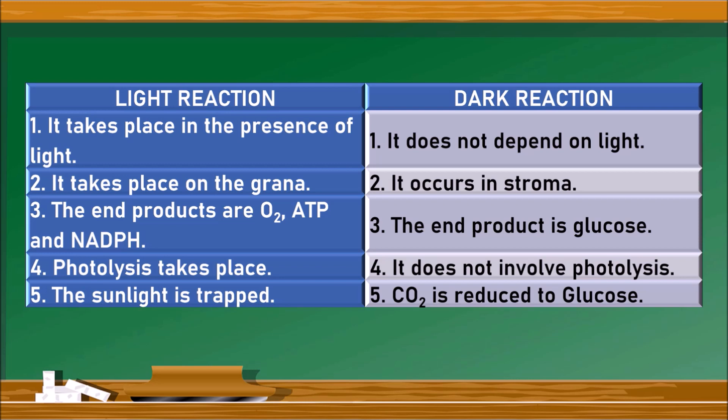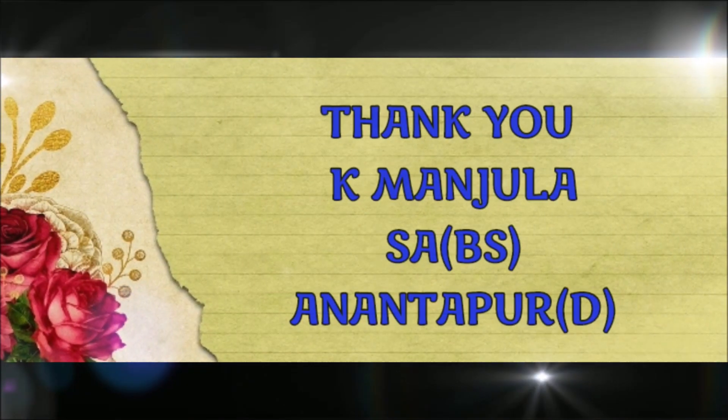The end products of dark reaction are glucose. In light reaction, photolysis takes place, but in dark reaction, no photolysis occurs. In light reaction, sunlight is trapped, whereas in dark reaction, sunlight is not trapped — instead, carbon dioxide is reduced in dark reaction.